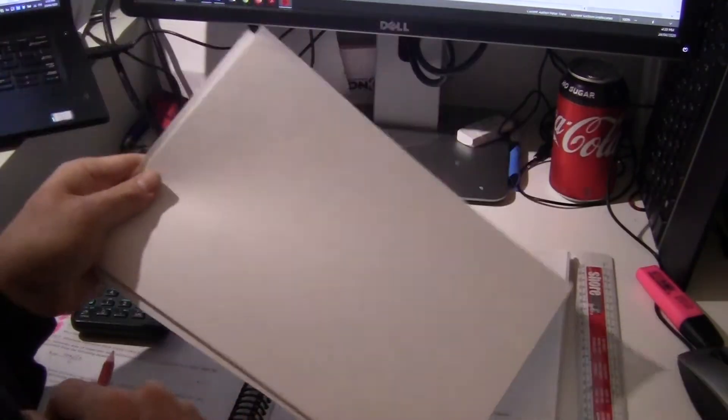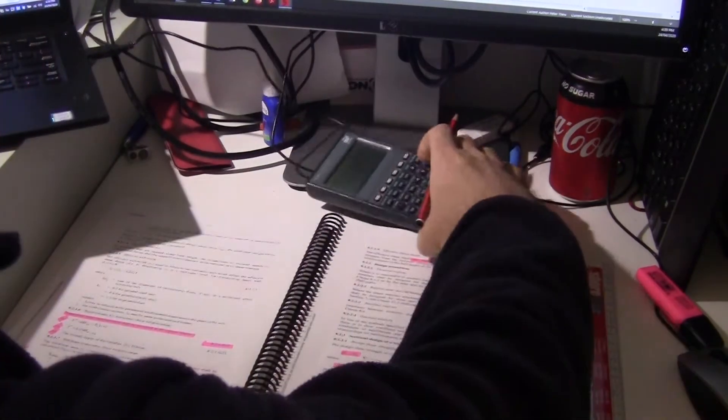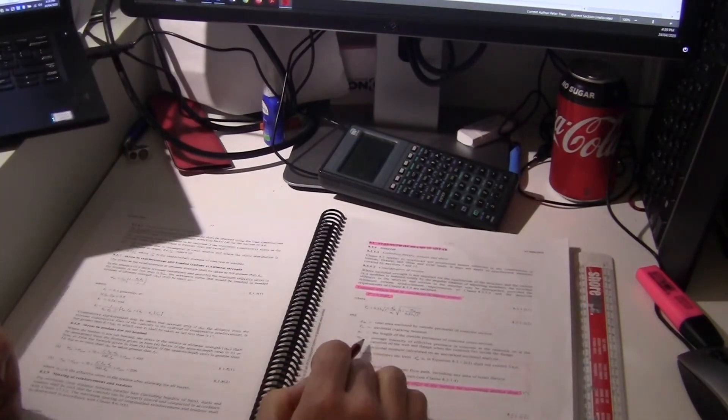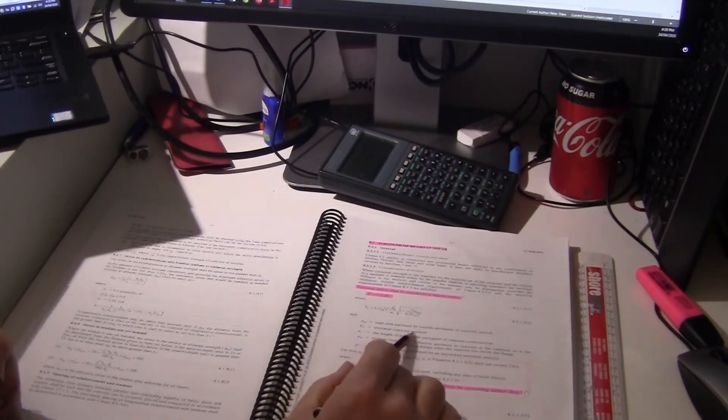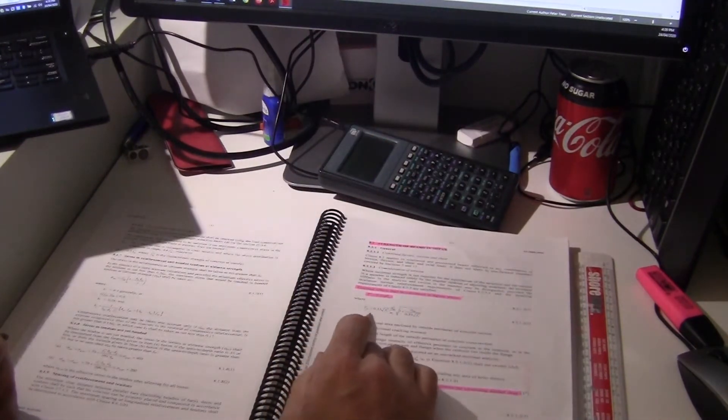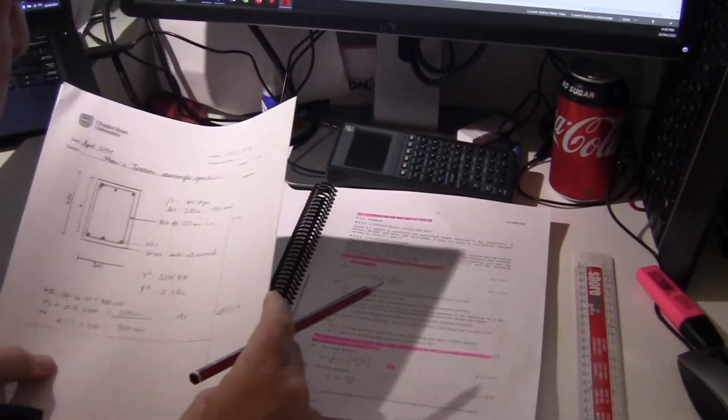All right, there's our first thing. Let's work out torsion. At the beginning, we have to have a look at our torsion. T-critical is the torsional cracking moment. That is a moment based on our concrete. So we're going to work out what that is, and then we're going to compare that to our torsional load.